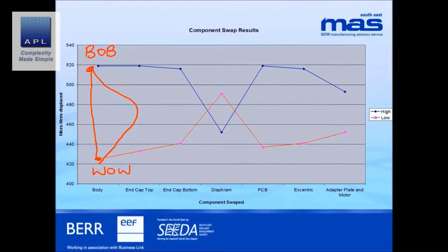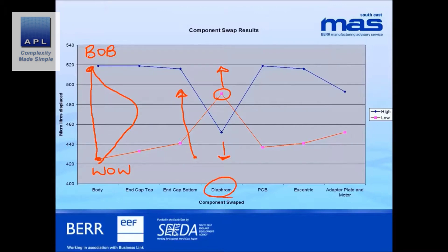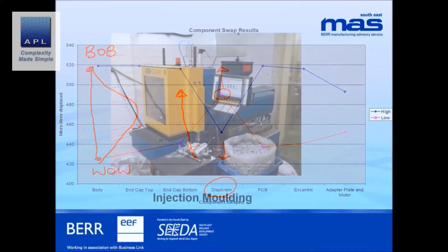We've swapped the parts out and we're looking for a complete reversal. Although the results haven't shifted fully to the same position in the distribution, think about where this result has come from — all the way down at the bottom — and been moved all the way up by having the diaphragm swapped out. It's very easy to see what the problem is: the problem lies with the diaphragm. That is what's driving the good and bad results massively in this case.